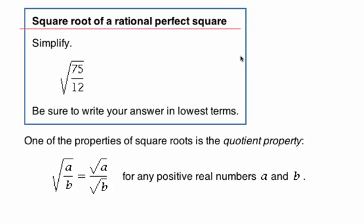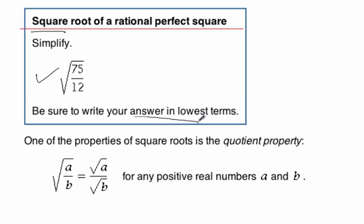Let's take a look at the square root of a rational perfect square. This one's actually pretty easy — it's a good start to learning how to simplify square roots. Here we've got the square root of 75 over the square root of 12, and of course our answer must be in lowest terms.